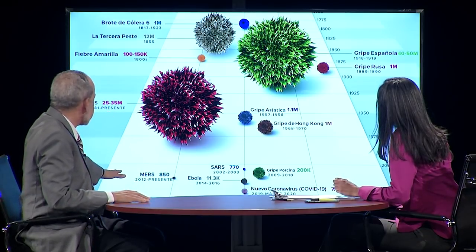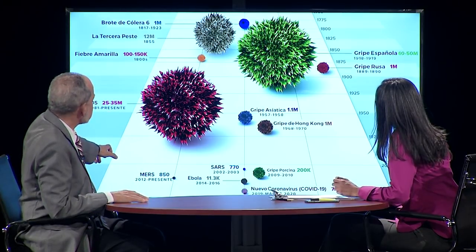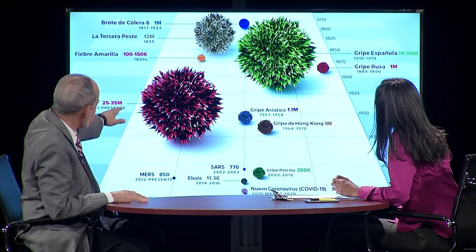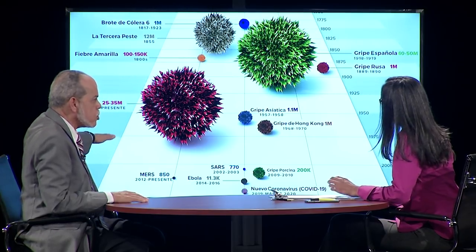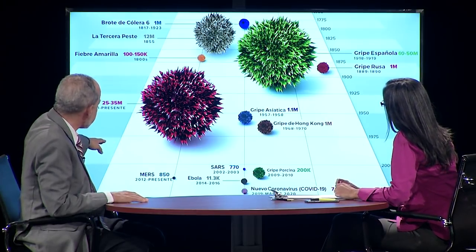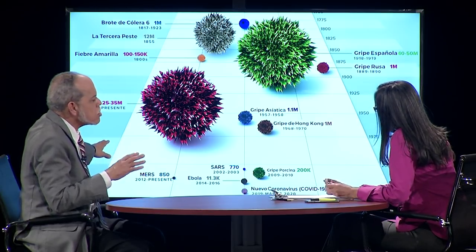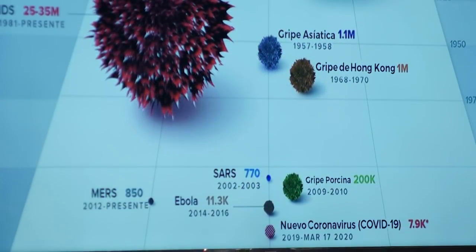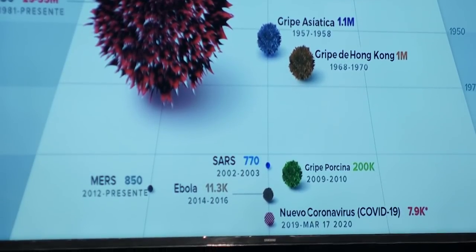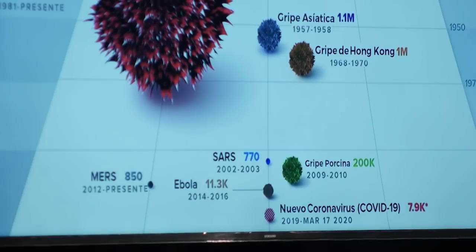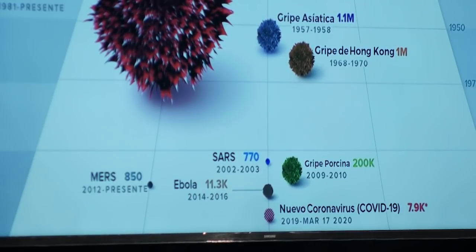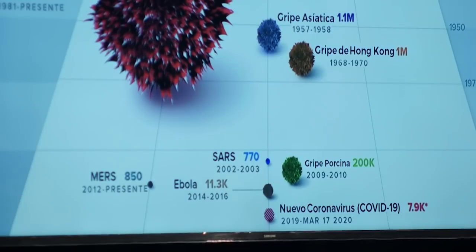Ahora vamos al final de la gráfica. Mira lo pequeño que resultan estos puntos comparado con los anteriores. El MERS, que fue un coronavirus en Arabia Saudita probablemente proveniente del camello, tuvo una mortalidad altísima de quizás un 30-35%, con unos 2,400 pacientes infectados y 850 muertos. El Ebola, que creó un gran pánico hace unos años, 11,000 muertos. El SARS, el coronavirus de China del 2003, 770 muertos con unos 8,000 pacientes y una mortalidad alrededor del 10%.